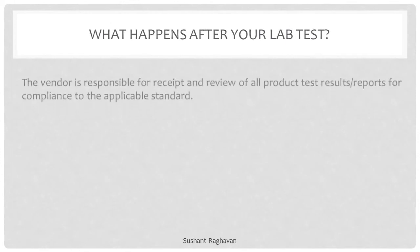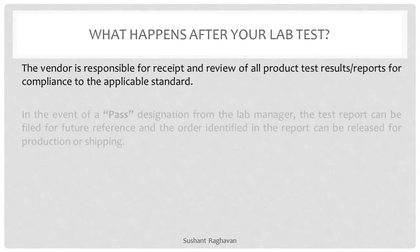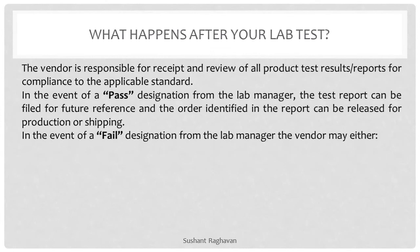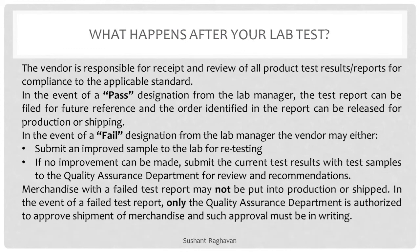What happens after your lab test. The vendor is responsible for receipt and review of all product test results and reports for compliance to the applicable standard. In the event of a pass designation from the lab, the test report can be filed for future reference and the order identified in the report can be released for production or shipping. In the event of a failed test report, the vendor may either submit an improved sample to the lab for retesting, or if no improvement can be made, submit the current test results with samples to the quality assurance department for review and recommendations. Merchandise with a failed test report may not be put into production or shipped. Only the quality assurance department is authorized to approve shipment of such merchandise, and such approval must be in writing.